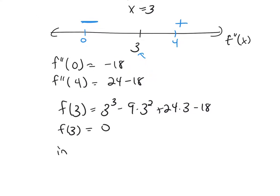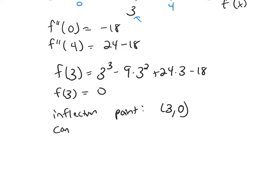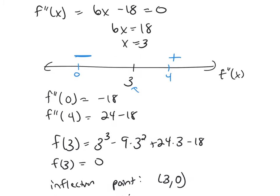So my inflection point is (3, 0), and then we want to talk about the concavity. So where is it concave up? Where is it concave down? You've got to look back at your sign chart here.